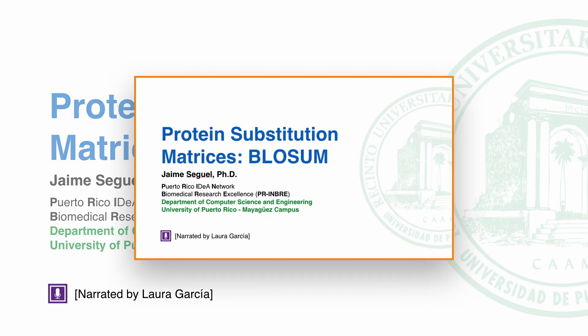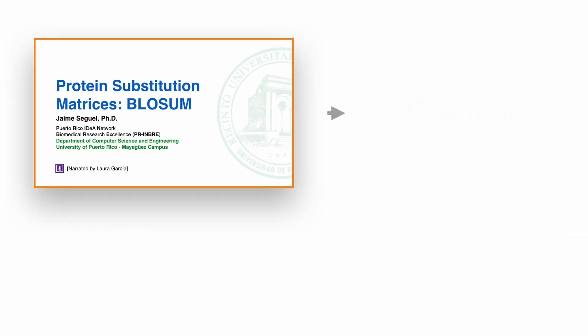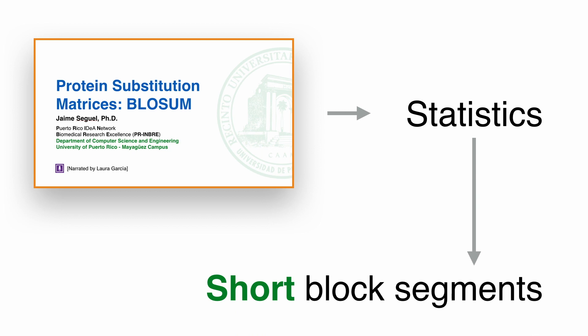The evolution model used in the construction of the BLOSUM matrices — this is the percentage of identity — does not necessarily reflect single point mutations as they occur in biological systems. Also, BLOSUM matrices take the statistics from short block segments that may be embedded in larger dissimilar sequences.